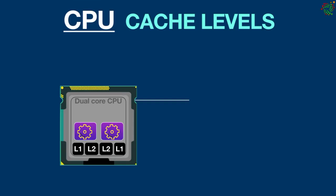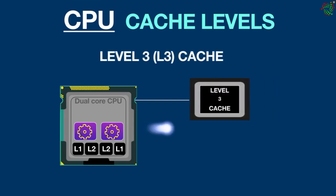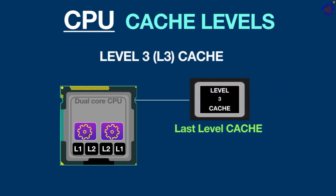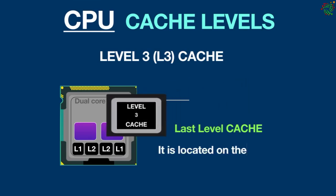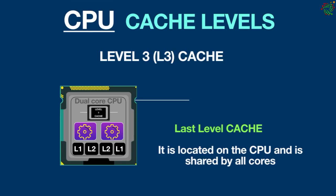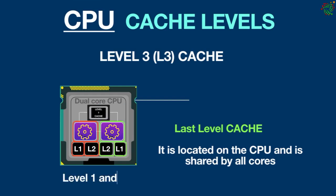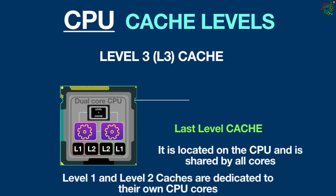Level 3 cache, also known as the last level cache, is larger than both level 1 and level 2 caches but is slower. It is located on the CPU and is shared by all cores. Level 3 cache plays an important role in data sharing and inter-core communications, whereas level 1 and level 2 caches are dedicated to their own CPU cores.